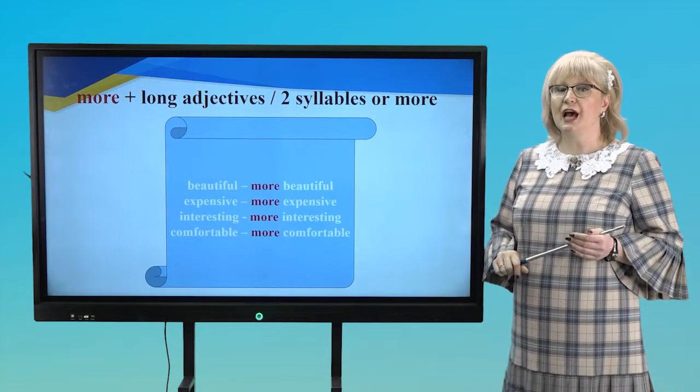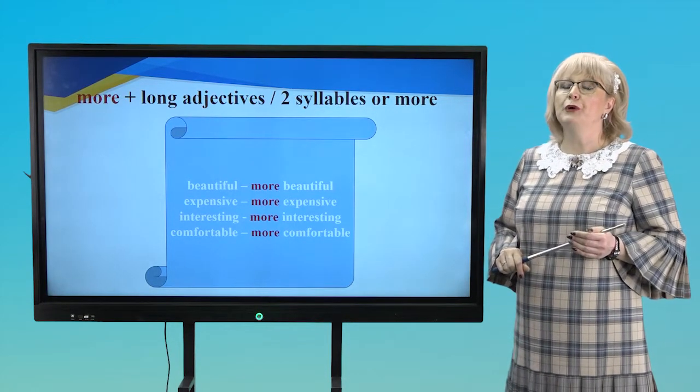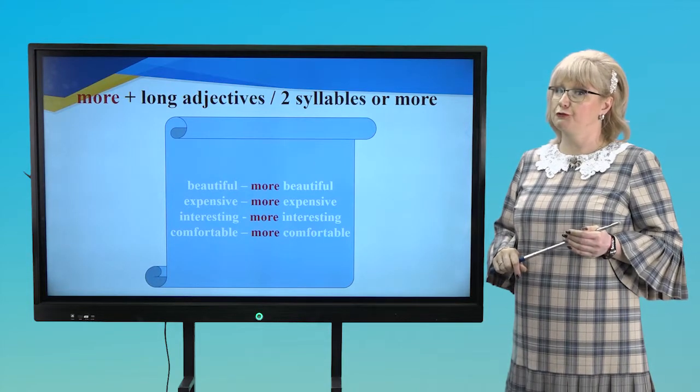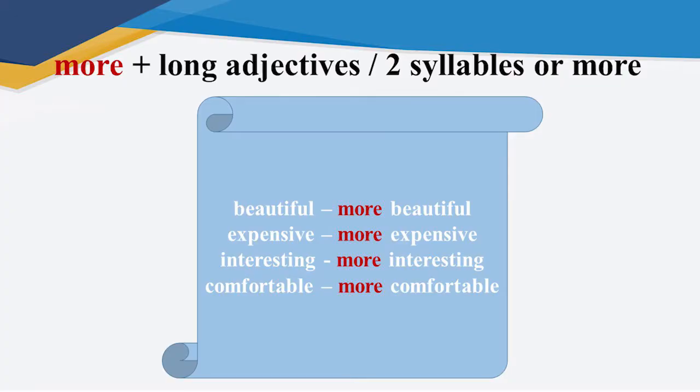If adjectives have two syllables or more, we use more before adjectives. For example, beautiful, more beautiful. Expensive, more expensive. Interesting, more interesting. Comfortable, more comfortable.